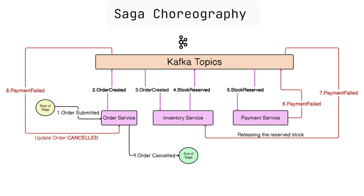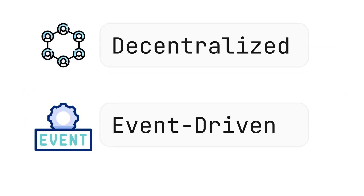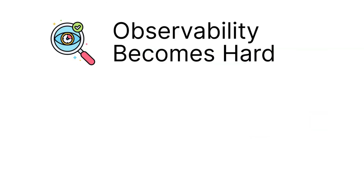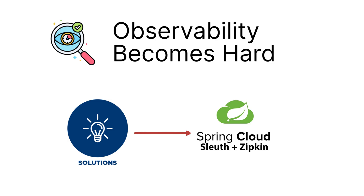The control flow becomes decentralized and event-driven. It is also more resilient, and services can have their own way of performing compensating actions. From a scalability point, it works really well in large systems. The only major issue is observability — it becomes harder as there is no single point of tracking. Although we have tools like distributed logging and tracing using Zipkin and Sleuth, they do add some extra complexity to the system.